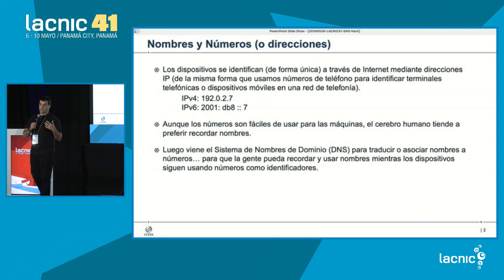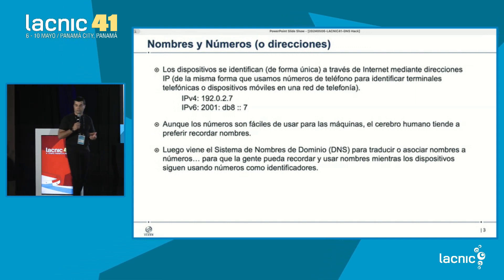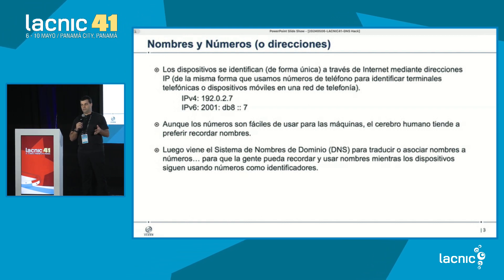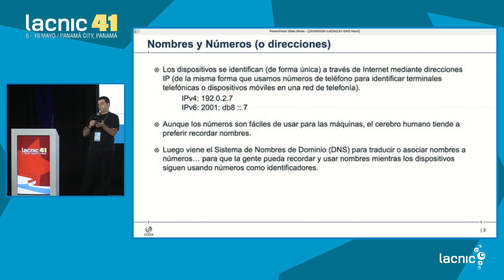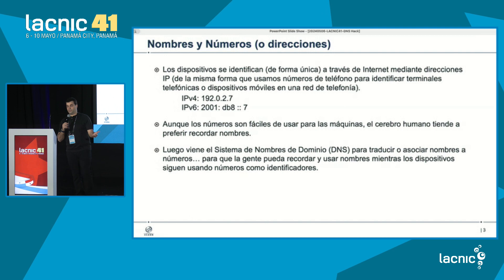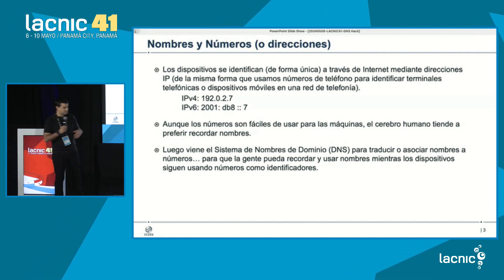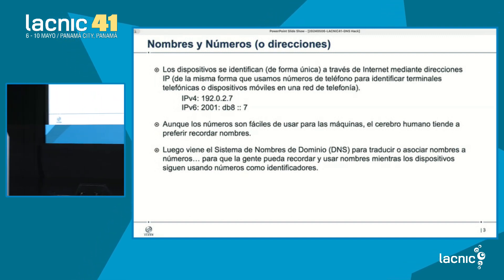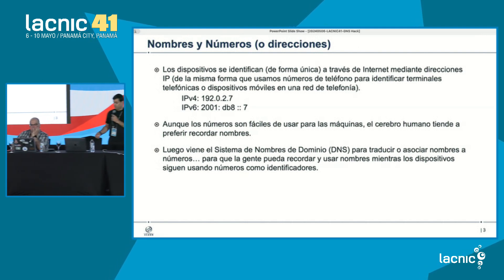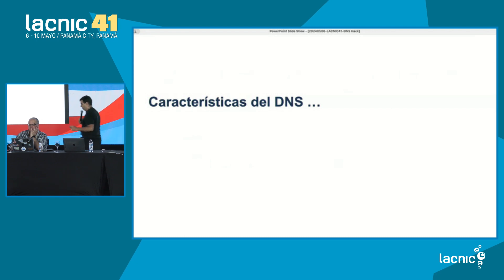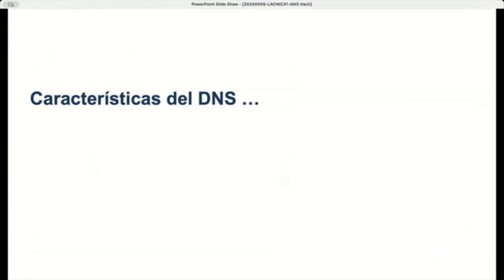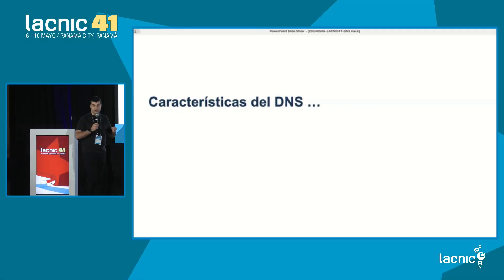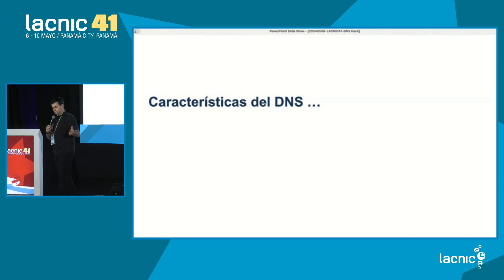¿Qué nombres? Los nombres de servicios en internet, conocidos como nombres de dominio. ¿Y qué números? Las direcciones IP. Esa es básicamente la funcionalidad para la cual el DNS fue diseñado: asociar nombres de dominio a direcciones IP, de forma que si quiero acceder a un servicio en internet ya no necesito recordar la dirección IP porque el DNS la traduce. Inicialmente el DNS estaba implementado con un archivo de texto; antes de eso, el señor John Postel tenía un bloque de notas donde anotaba todos los hosts y los nombres de dominio asignados. Después evolucionó al famoso hosts.txt que había que guardar en cada dispositivo.